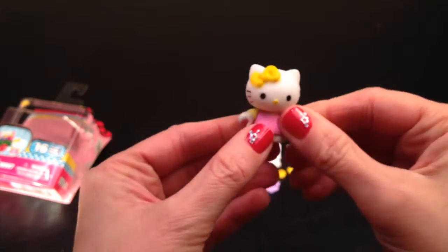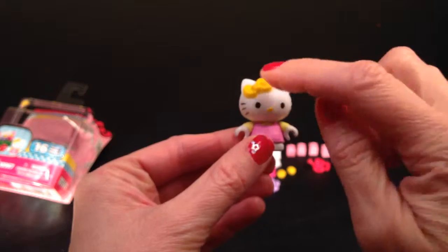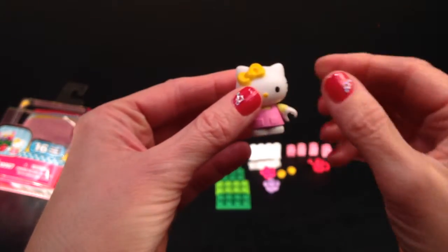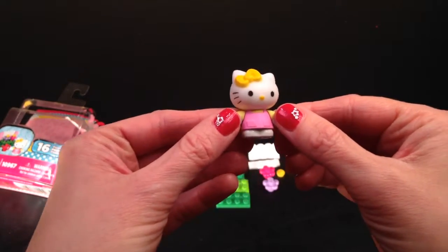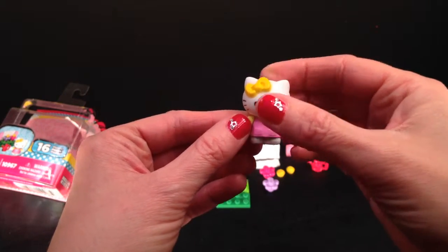No, actually I guess they don't. I thought they did, but they don't. She's got a pretty yellow bow in her hair and a pretty pink jumper and she is ready to do some gardening. So let's build her garden.